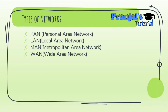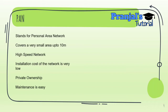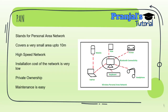PAN stands for Personal Area Network. This network covers a small, room-sized area — up to 10 meters. It is a high-speed network. The installation and setup cost is low. Ownership is private, and the maintenance cost is also very low.